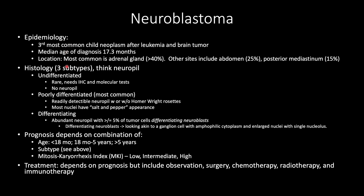Undifferentiated subtype has no neuropil, and you do need, according to the WHO, IHC and molecular tests. The most common subtype is poorly differentiated, with readily detectable neuropil with or without Homer Wright rosettes, and most nuclei have a salt and pepper appearance. Then there is the differentiating subtype, where you have abundant neuropil with greater than or equal to 5% of tumor cells as differentiating neuroblasts. Differentiating neuroblasts look akin to ganglion cells with amphiphilic cytoplasm and enlarged nuclei with a single nucleolus.